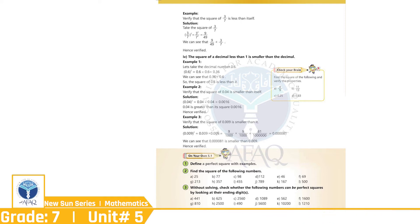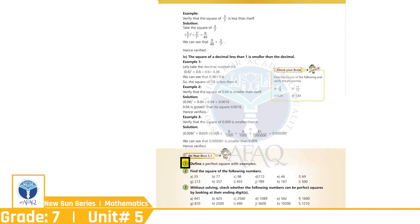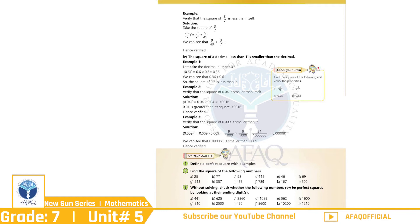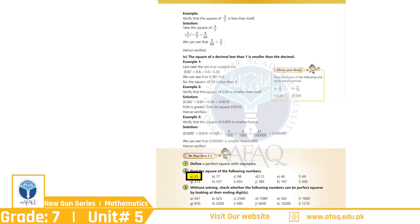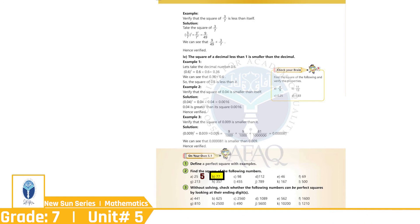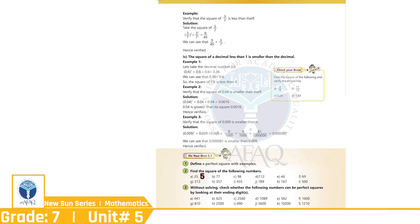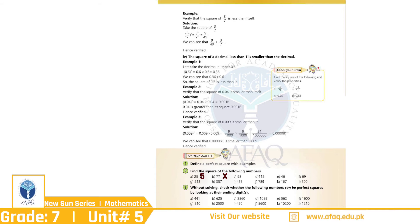بچو، ان concepts کو سمجھنے کے لیے exercise میں سے کچھ سوال حل کرتے ہیں۔ Page 66, Question No. 1: Define a perfect square with examples. بچو، یہ definition اب آپ نے خود کرنی ہے۔ Question No. 2: Find the square of the following numbers. A. 25 — اگر ہم 5 کو 5 کے ساتھ multiply کریں تو اس کا answer 25 آئے گا۔ B. 77 — اگر ہم 77 کا prime factorization لیں تو پتہ چلتا ہے کہ 77 کے prime factors ہیں 11 and 7، اس لیے 77 کے perfect square نہیں بنتے۔